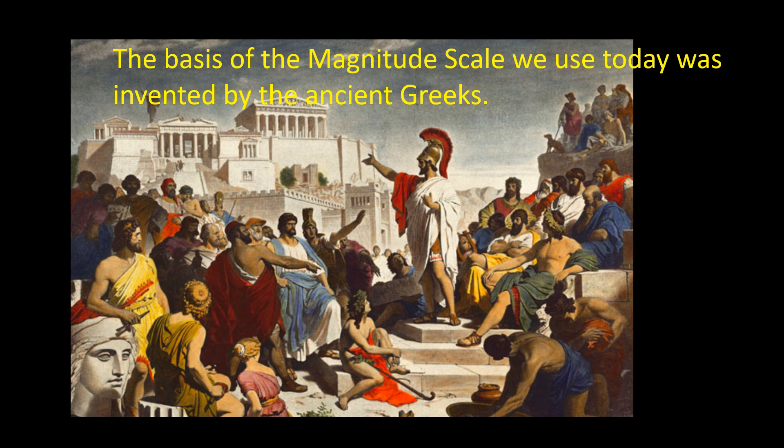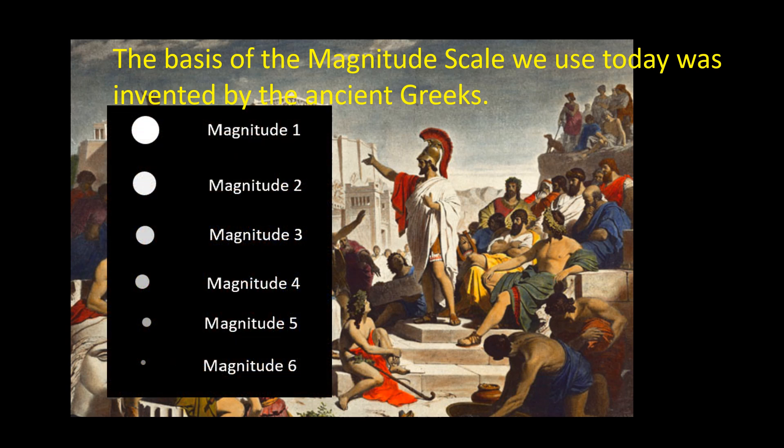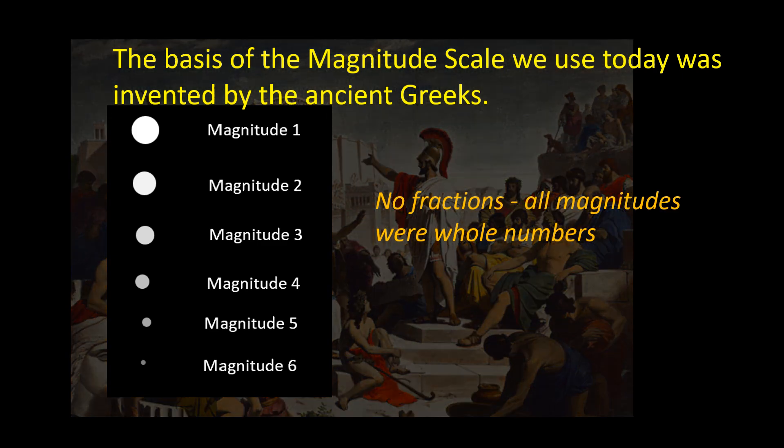They classified all stars into six magnitudes. The brightest stars were magnitude 1, the next brightest magnitude 2 and so on. The faintest stars visible to the naked eye had a magnitude of 6. The magnitude scale was unusual in that the lower the numeric value the brighter the object. The ancient Greeks gave all stars magnitudes which were whole numbers.